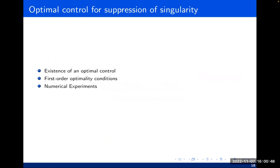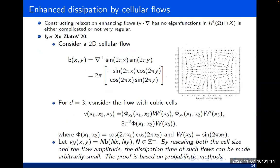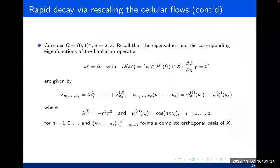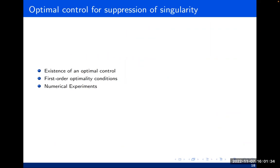Before moving to control problems, understanding global well-posedness is most important. Now I'll talk about optimal control for suppression of singularity in the PKS system. As shown, one can increase the frequency and amplitude of the flow to get global well-posedness. The question is, it may not be a good idea to simply increase the magnitude. What would be the optimal one? In real life, if we have heat focused in a dense area, you'd like to introduce a fan — but what would be the range of orientation and intensity? How do you introduce an optimal flow field for the advection?